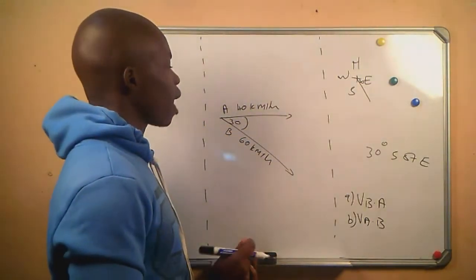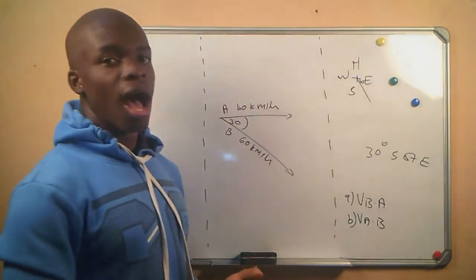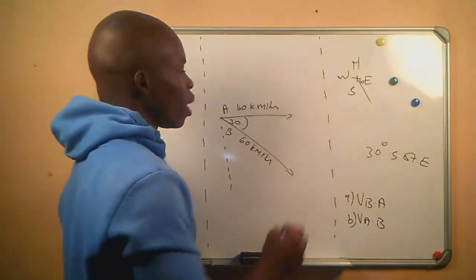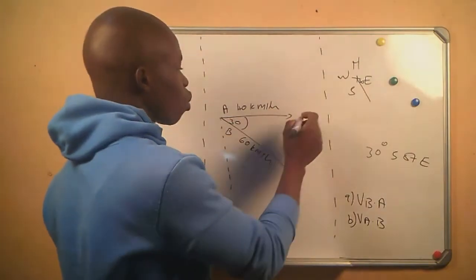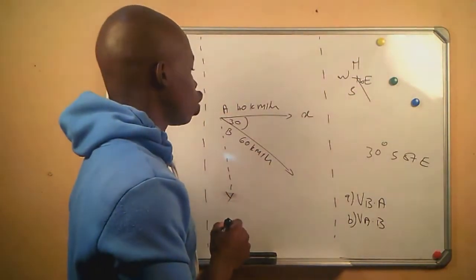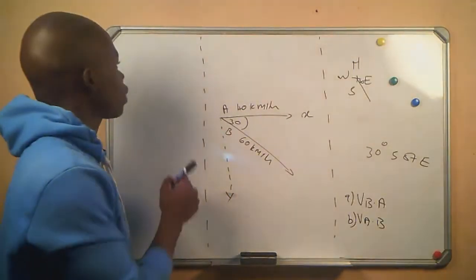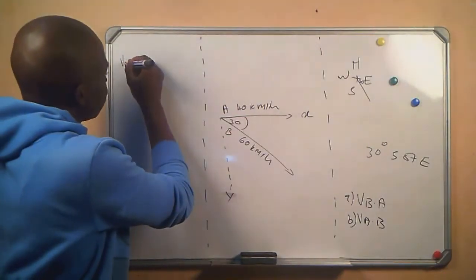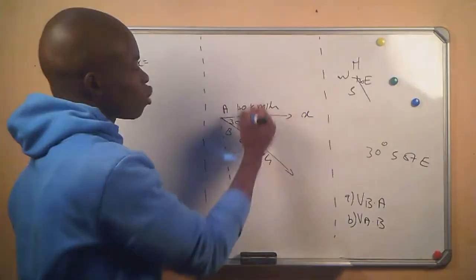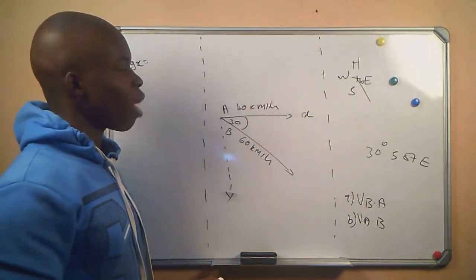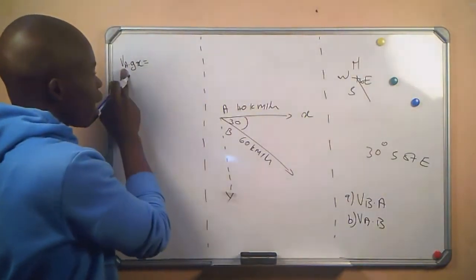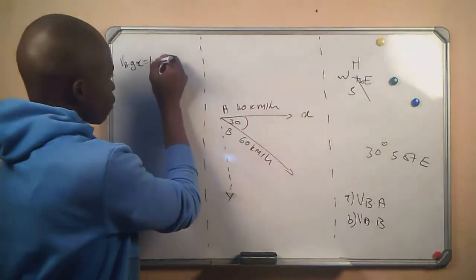Since we can tell from the diagram that these two cars are not moving in a parallel direction, that tells us that in this question we will have to consider the X and Y direction of each car. Now we start with car A. The velocity of car A relative to the ground in the X direction — since the car is traveling at 40 kilometers per hour and it is along the X line — the velocity of car A relative to ground X will be 40 kilometers per hour.